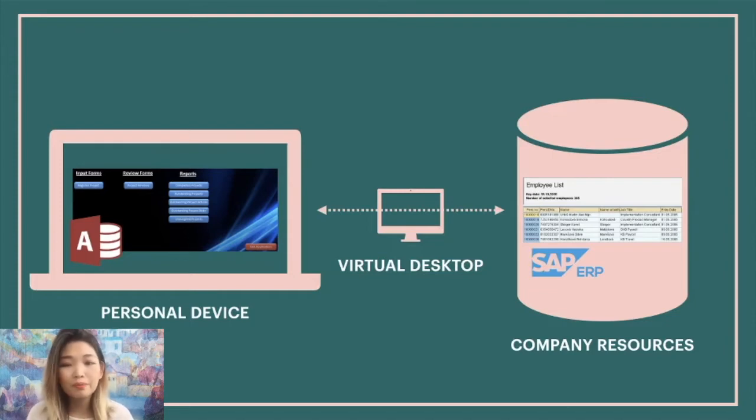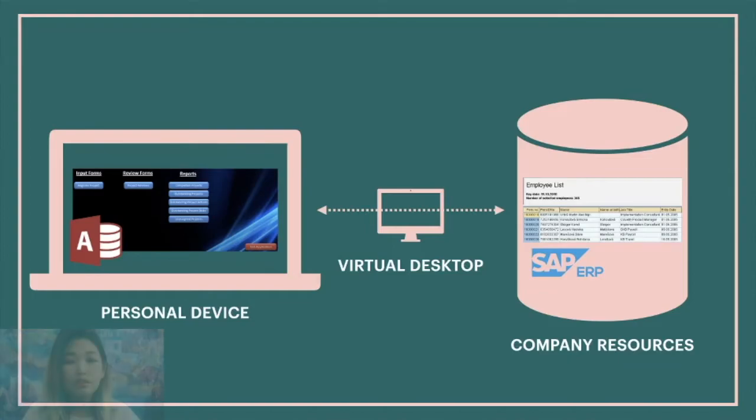It does not represent a great risk to the organization as long as users access the company resources centrally and securely — for example, through a virtual desktop or a desktop as a service. Can you think of another example of an end-user computing application or system? Let me know in the comments.